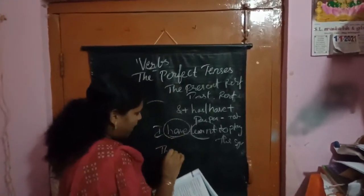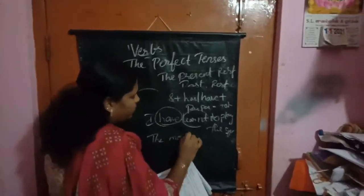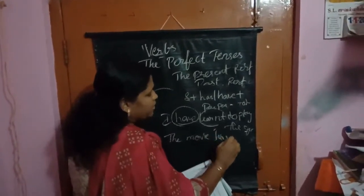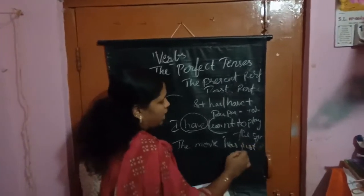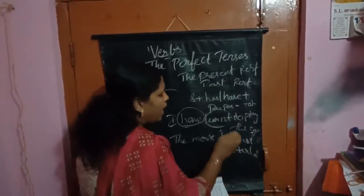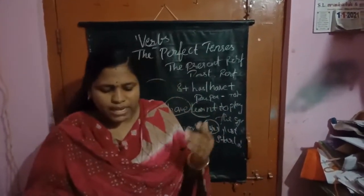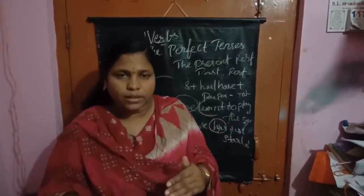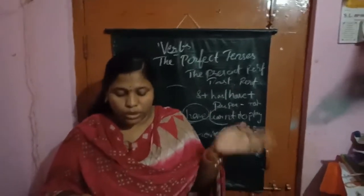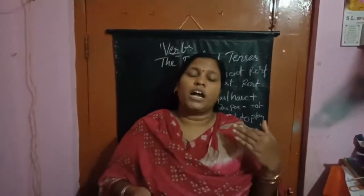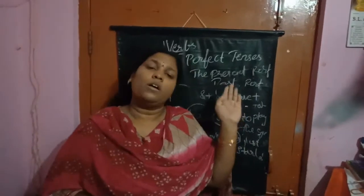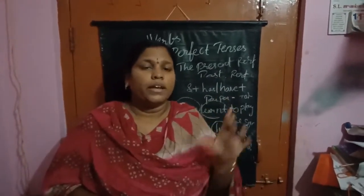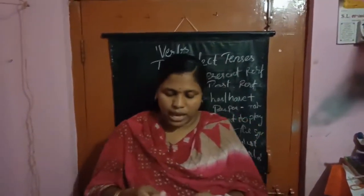'My aunt has baked a cake just now.' 'The movie has just started.' Here we are using 'has.' The movie has just started — meaning it is started now. Also, things that started in the past and are happening even now: 'I have lived in this house since my childhood' — meaning in the past also, and now also she is living there.